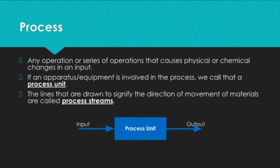At the top of the lesson, let us clearly define what is a process. We define a process as any operation or series of operations that causes physical or chemical changes in an input. What we are saying here is anything that causes a change is a process. For example, when you are eating, you are making changes to the physical and chemical makeup of food. So the act of eating is a process.